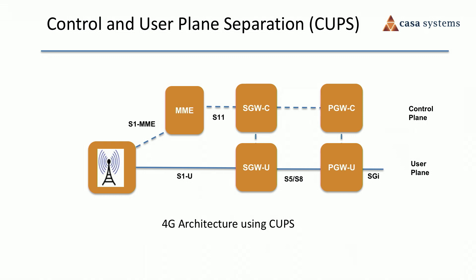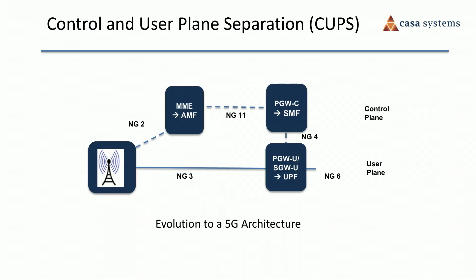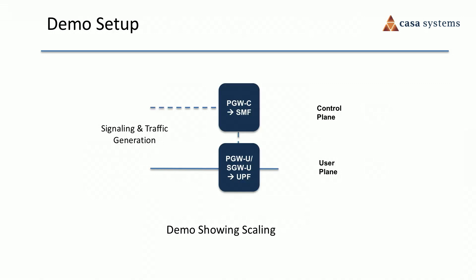In a 4G CUPS network, the P gateway now becomes the P gateway C for control and the P gateway U for user plane. Looking at 5G, the 5G architecture is designed right from the start to have the control and the user plane separated. In our demo today, we'll focus on the P gateway C and the P gateway U, and we'll be scaling in multiple dimensions.